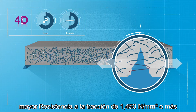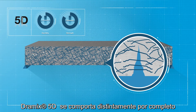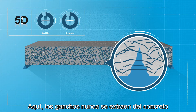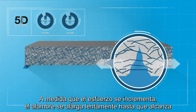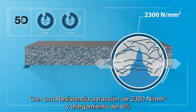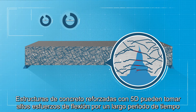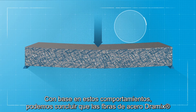Dramex 4D provides the same process, but with even better anchorage and a significantly higher tensile strength of 1,450 N/mm² or more. Dramex 5D behaves differently altogether. Here, the hooks never pull out from the concrete. As the stress increases, the wire slowly elongates until it reaches its maximum strength. With a tensile strength of 2,300 N/mm² and elongation of 6 percent, concrete structures reinforced with 5D can take high flexural stresses over a long period.